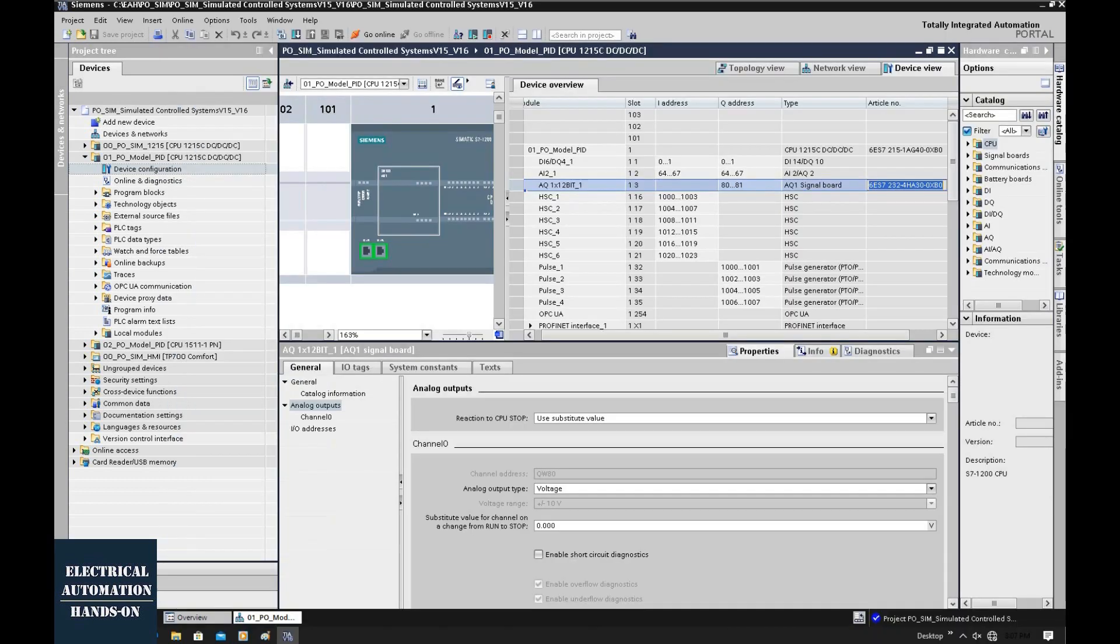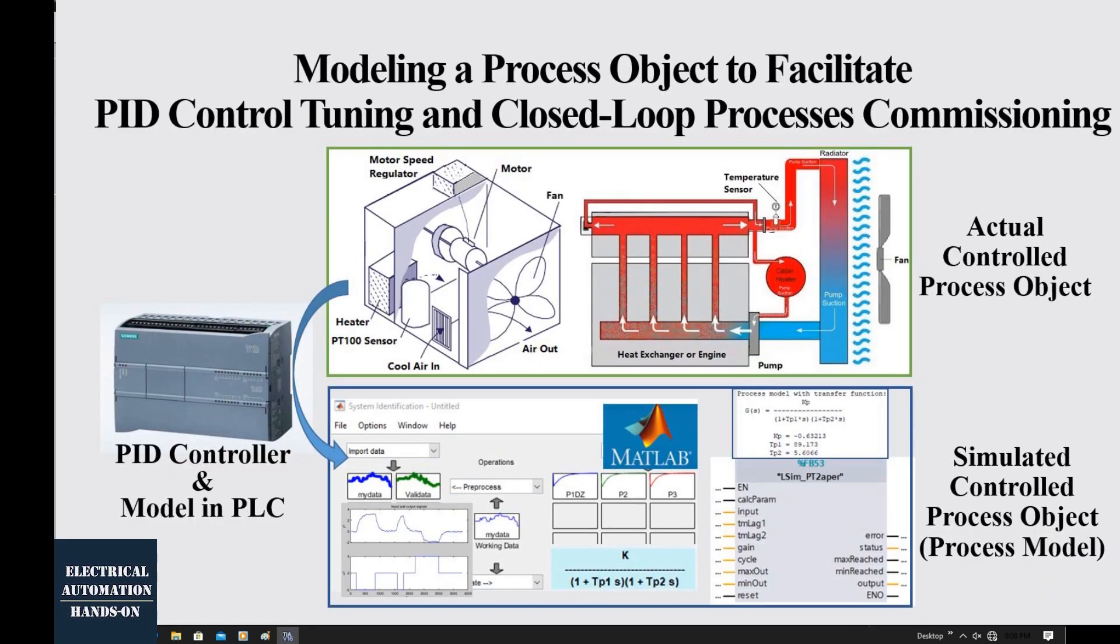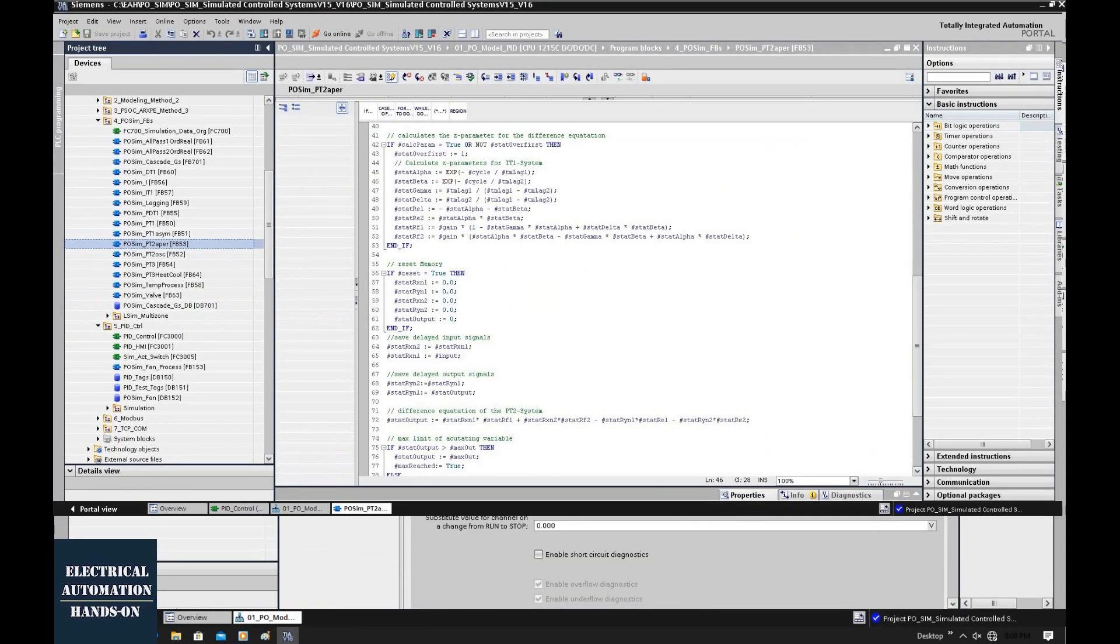I highly recommend using a controller that supports SCL programming language. After we use MATLAB to identify the transfer function of the process model, we'll implement this model into our PLC. The transfer function will be converted to Z equations. If your controller supports SCL, it's much easier because that programming style is similar to C and can handle many equations in function blocks.